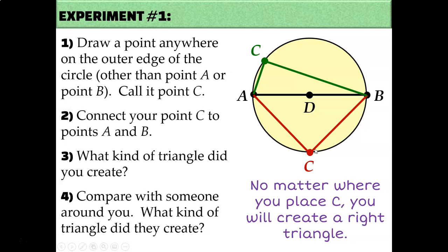They would all have to be right triangles. Remember that inscribed angles are equal to half of the central angle that they intercept. Angle ACB is an inscribed angle because its vertex is on the circle, and it intercepts central angle ADB. Angle ADB has to be 180 degrees because it's a straight line, so angle C would have to be half of that — so C has to be 90. No matter where you draw point C on this circle, it's going to create a right triangle. But that's only true if AB is a diameter, because that means it's a central angle measuring 180 degrees.